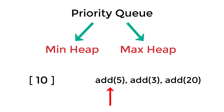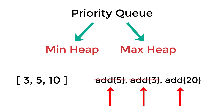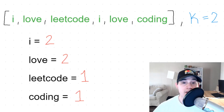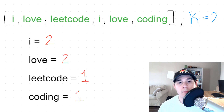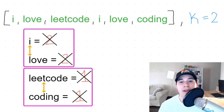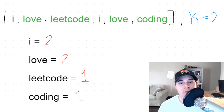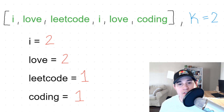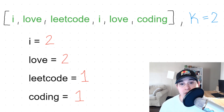The priority queue will maintain the order we want using a custom comparator class. We want to order pairings by frequency, but if frequencies are the same then we order by alphabetical order. When writing the custom comparator, we'll have a conditional: if frequencies are the same, order by alphabetical order; if not the same, simply order by frequency.